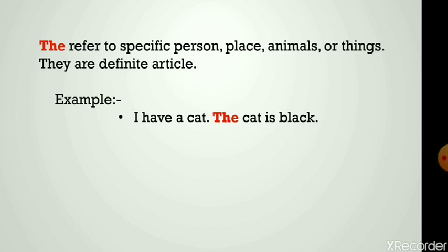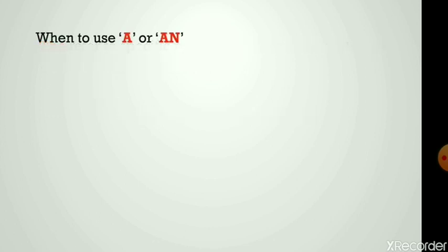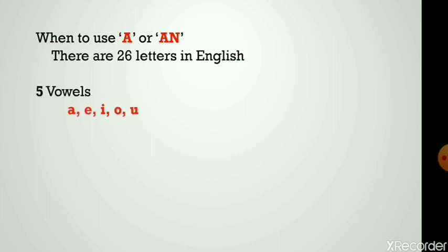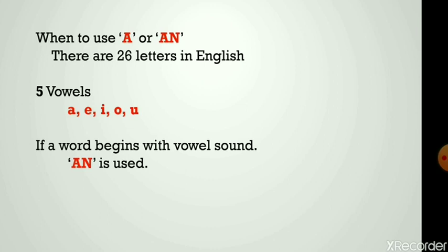When to use a or an? There are 26 letters in English. Five vowels: a, e, i, o, u. If a word begins with a vowel sound, 'an' is used. For example: an apple, an egg.